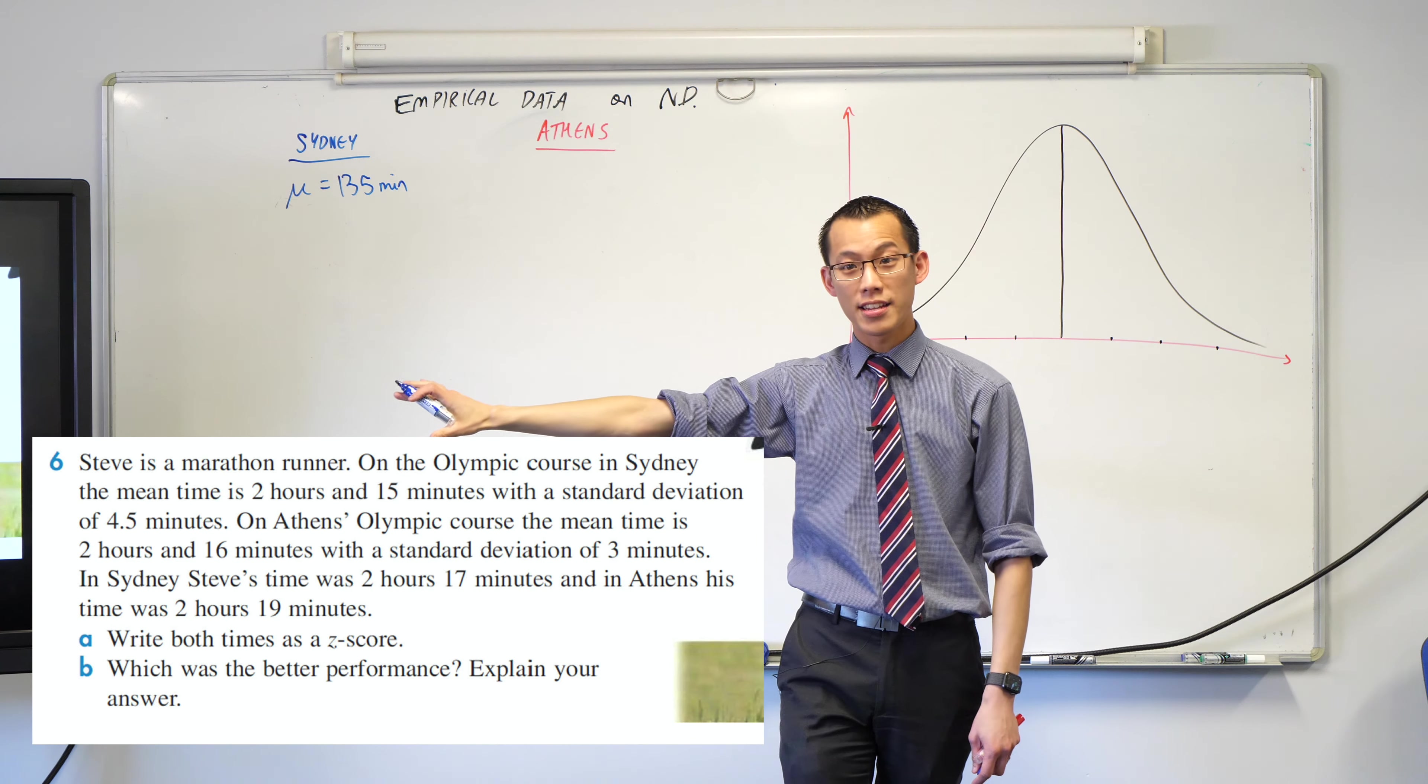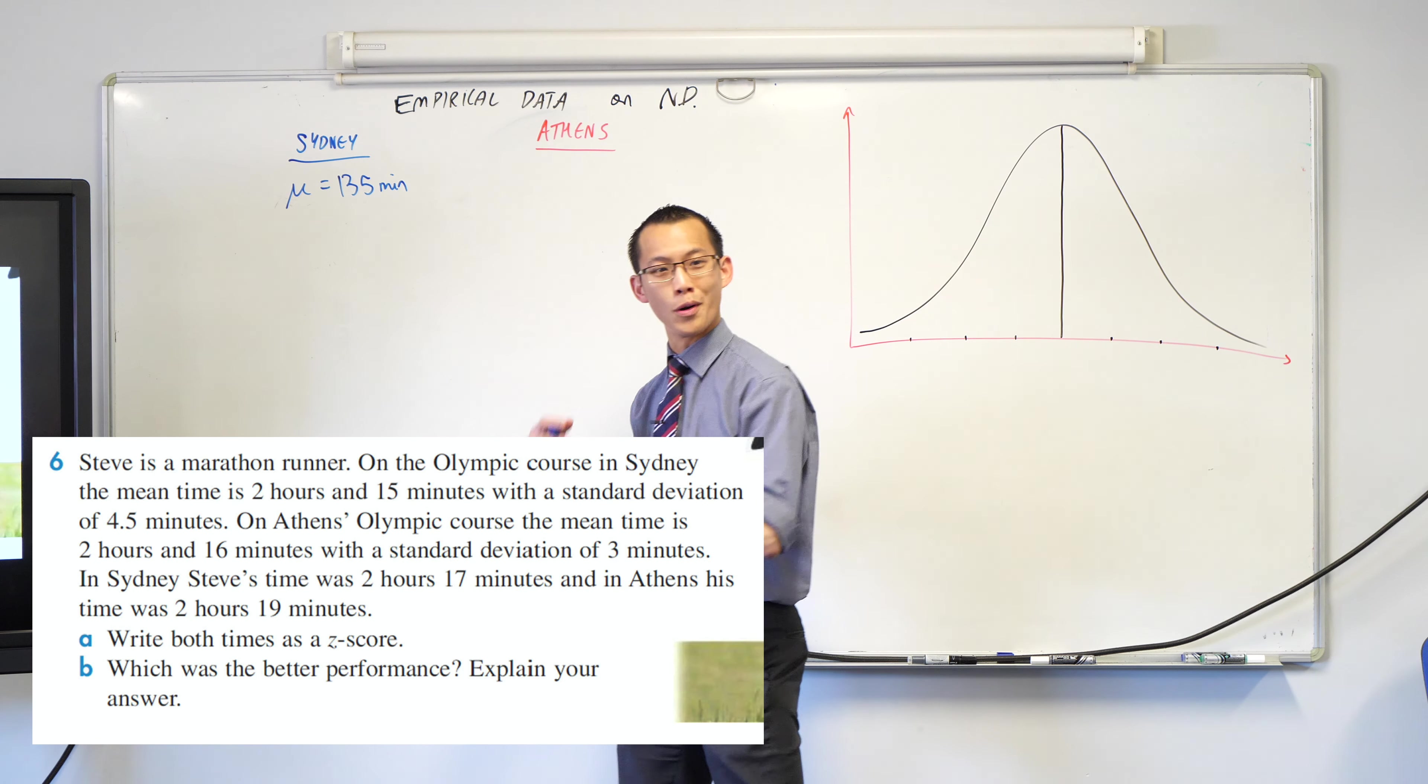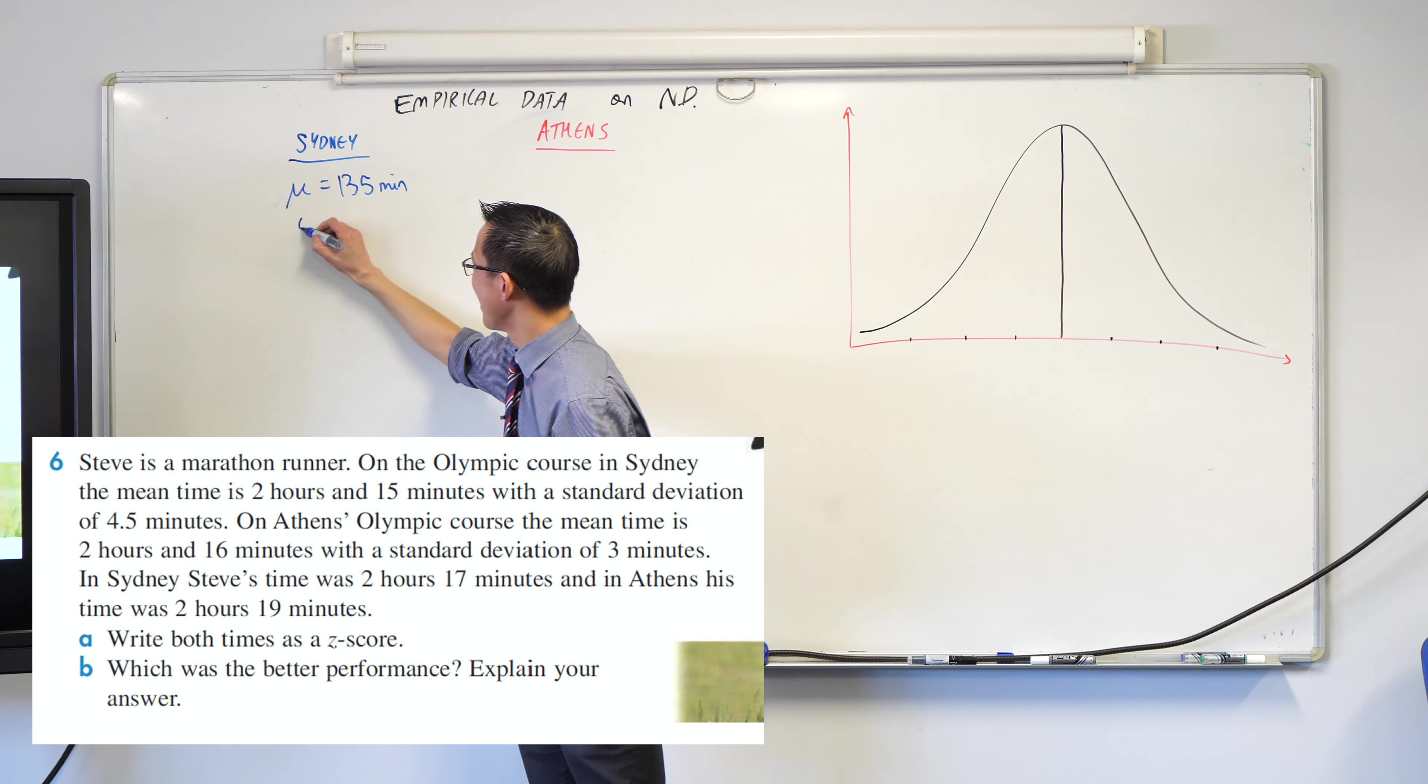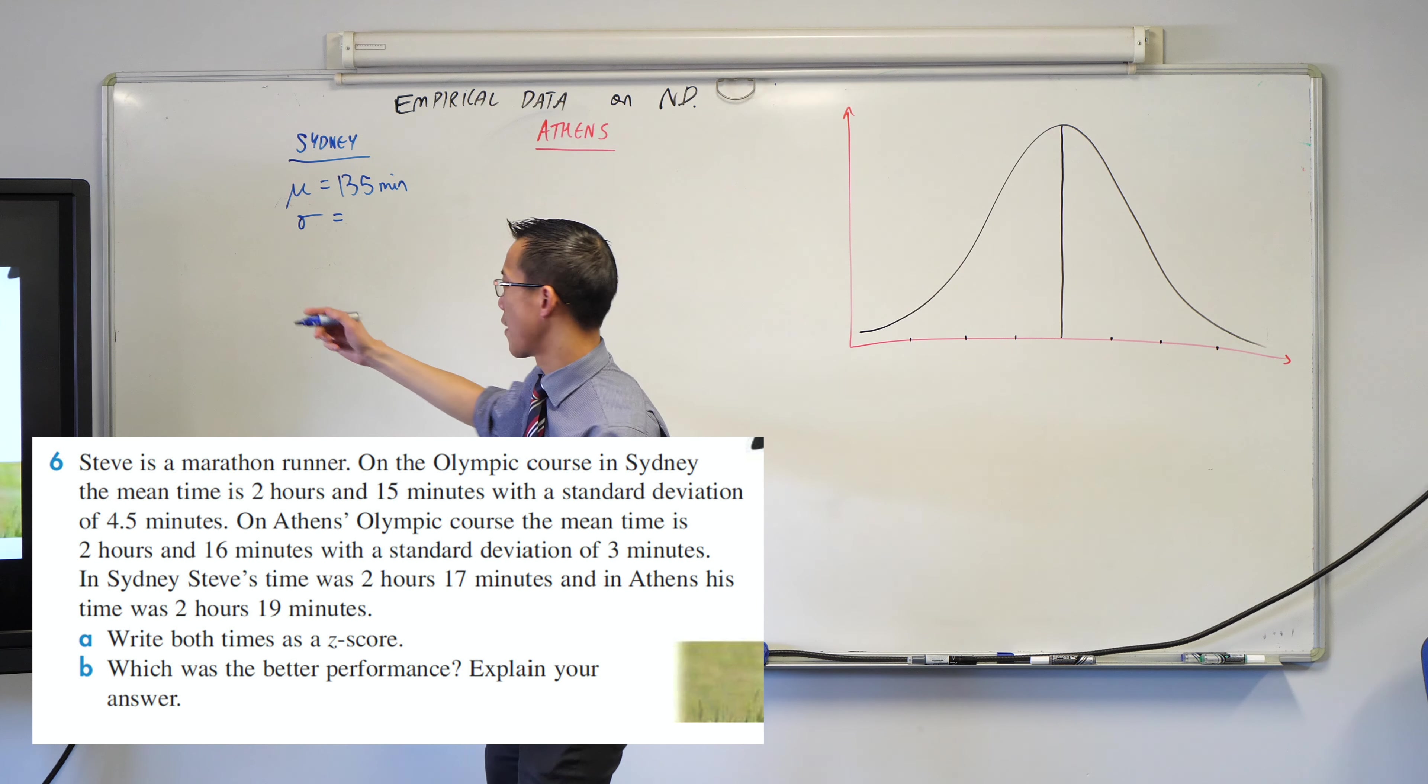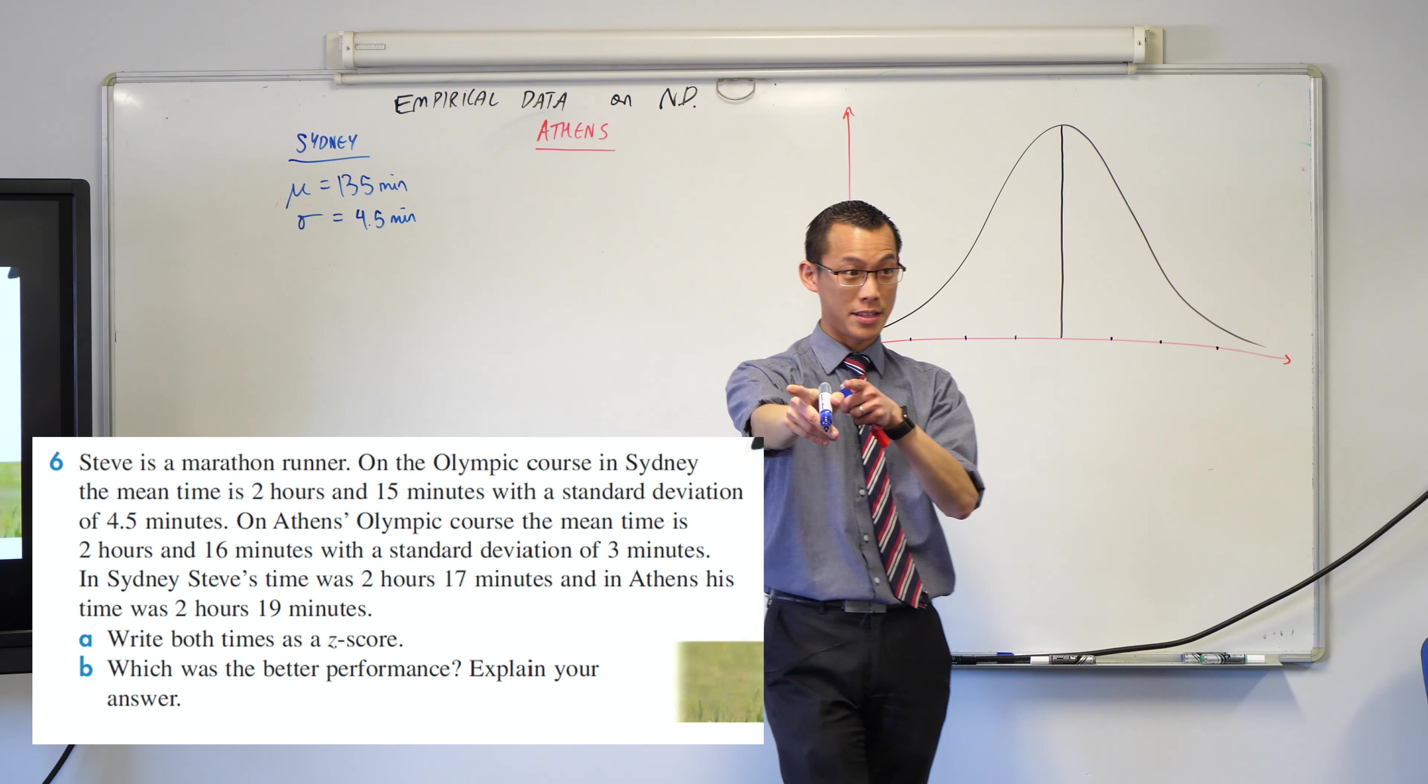So μ equals 135 minutes. That's the mean. The next number they give us is standard deviation. What Greek letter do we use for standard deviation? Sigma, very good. σ equals 4.5.